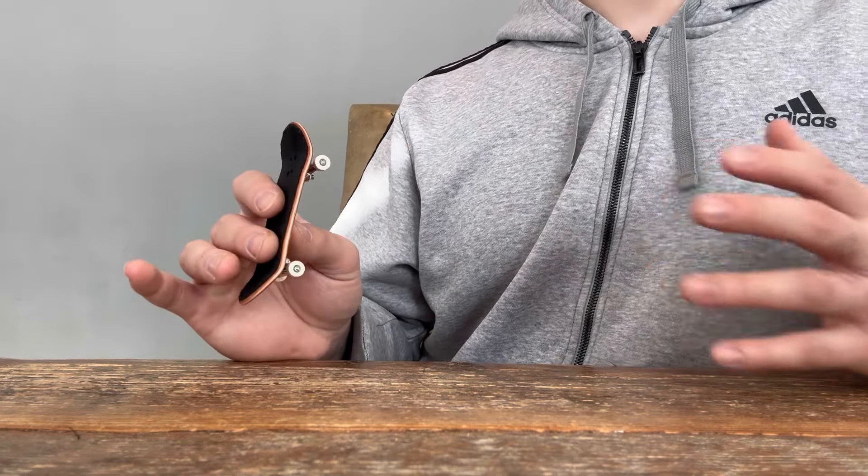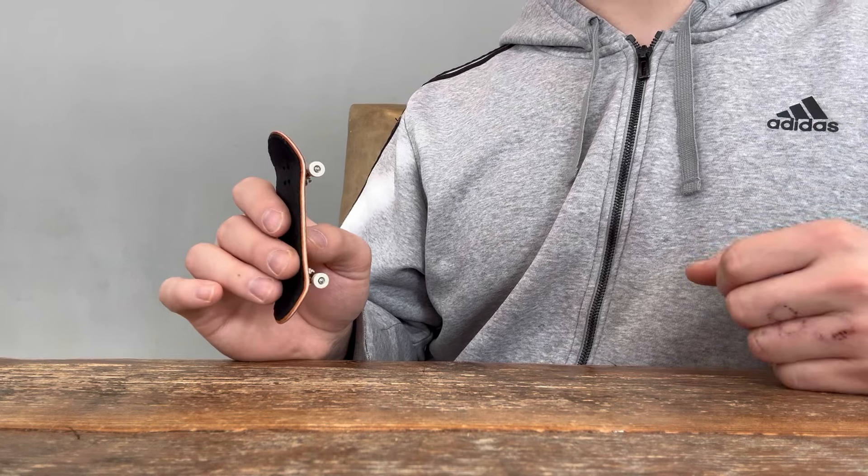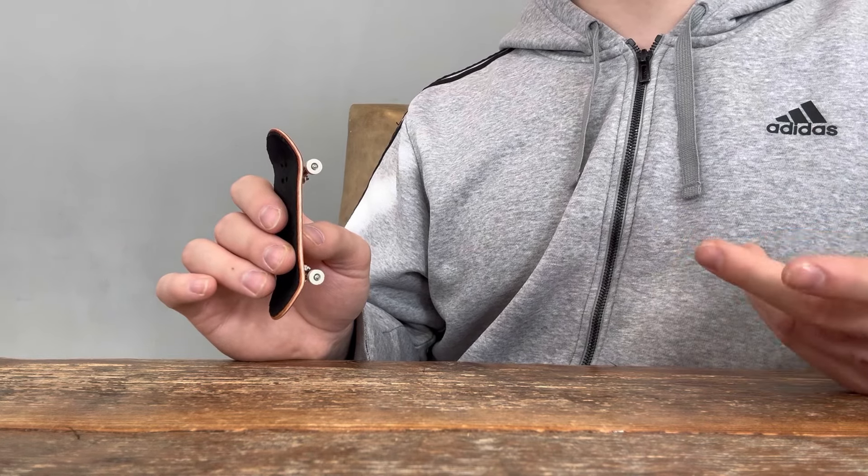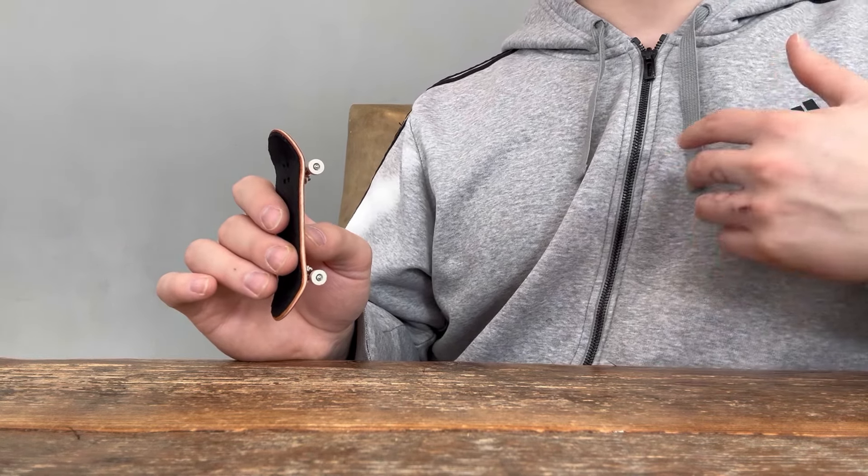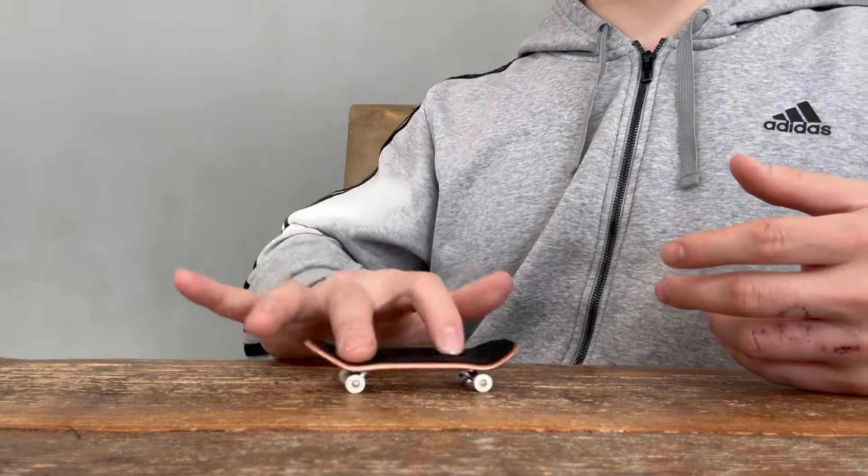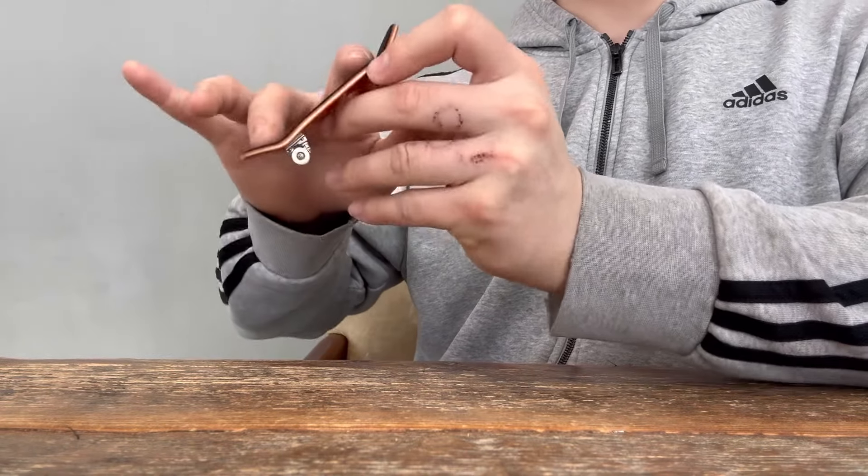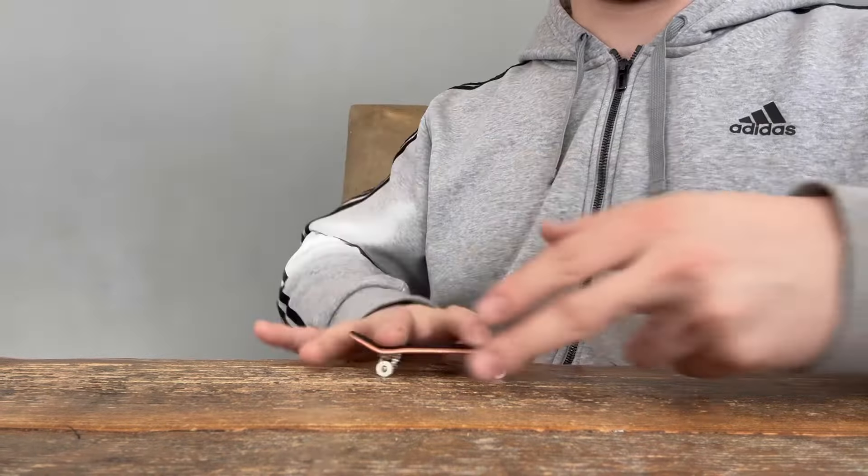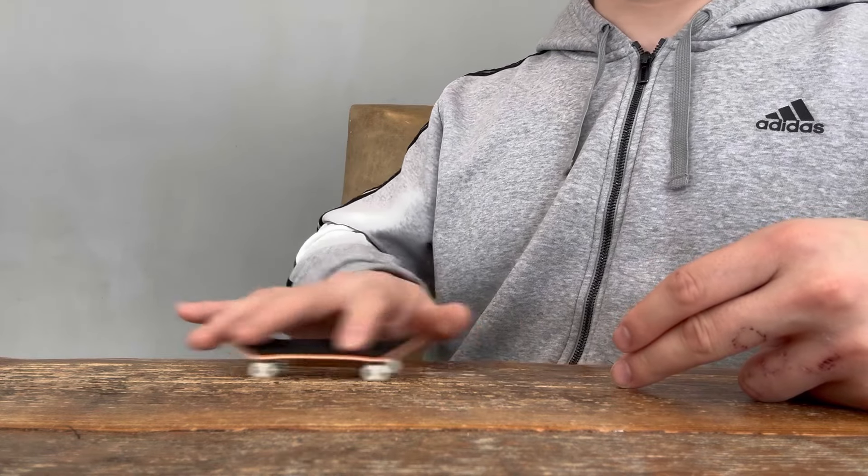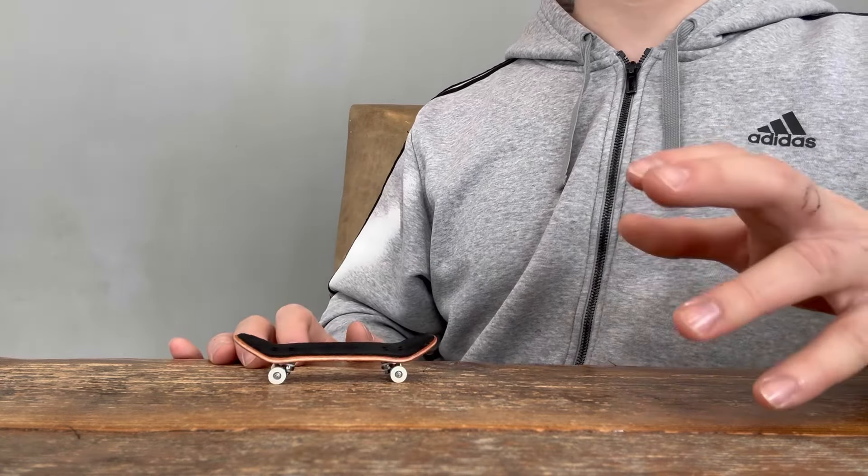Now the ollie can sometimes be a little bit more difficult to do than a kickflip sometimes and that's because there's more steps or stages till you land. When you start you have the beginning, the middle, and the end and then you're landing and if you control the board through all of those stages it looks great.